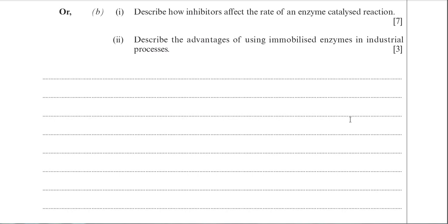Let's run through some key points about inhibitors, starting with the competitive inhibitor. These inhibitors actually bind to the active site. You can describe their structure as partially complementary to the active site — the competitive inhibitor is complementary to the active site, but not perfectly so. It has regions that are complementary to the active site, and you could say it is structurally similar to the substrate, but it's not identical in shape to the substrate.